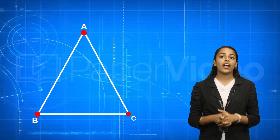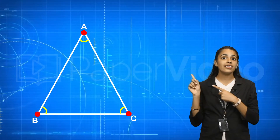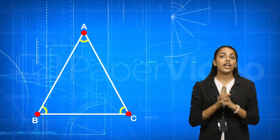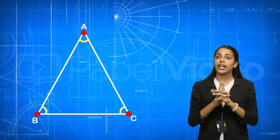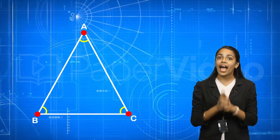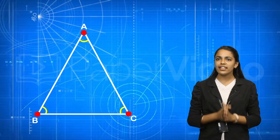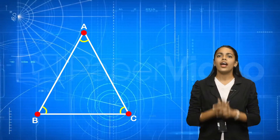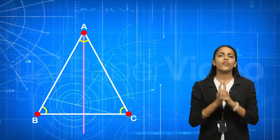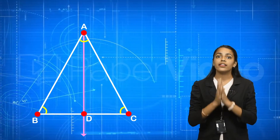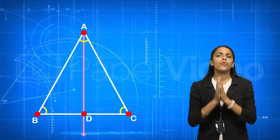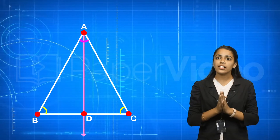As we know there are three angles in a triangle. These three angles are known as the internal angles of a triangle because these angles are inside the triangle. An internal bisector of an angle of a triangle is a ray that bisects one of the three internal angles of a triangle.